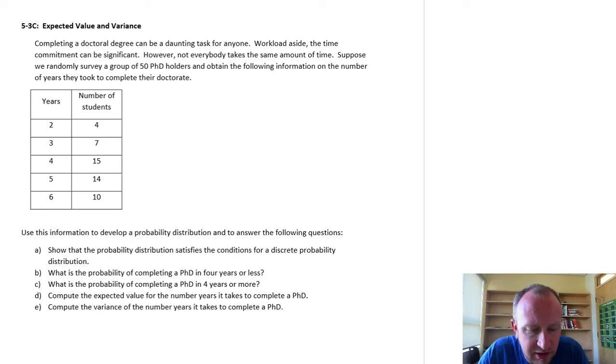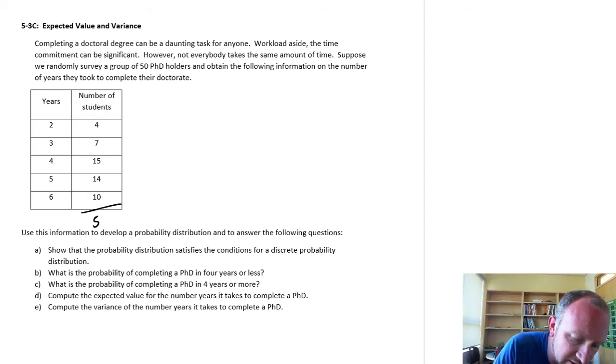We're looking at completing a doctoral degree. Workload aside, the time commitment is significant, but not everybody takes the same amount of time. We look at a random survey of a group of 50 PhD holders and obtain the following information on the number of years taken to complete their degree. So what we have is our number of students. This adds up to our 50 students. Of those 50 students, 4 of them took 2 years, 7 of them took 3 years, 15 of them took 4 years, and so on.